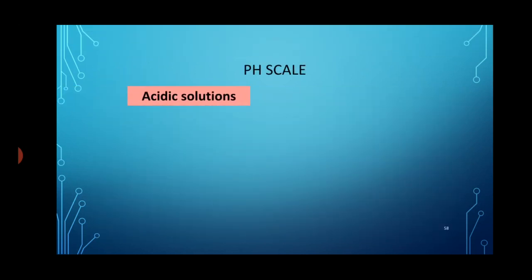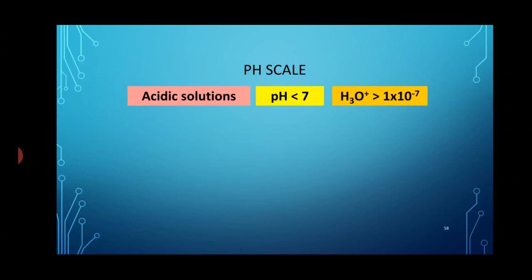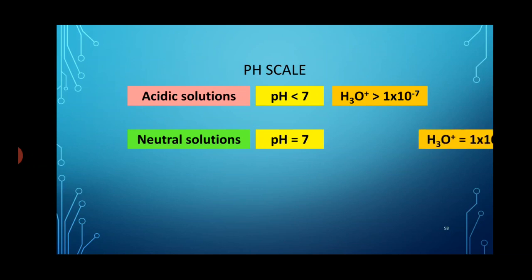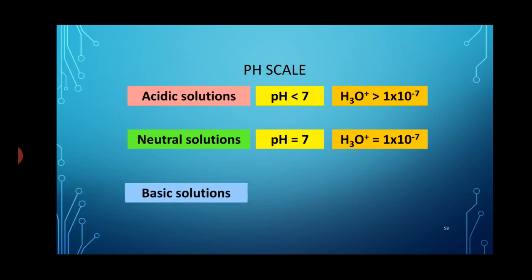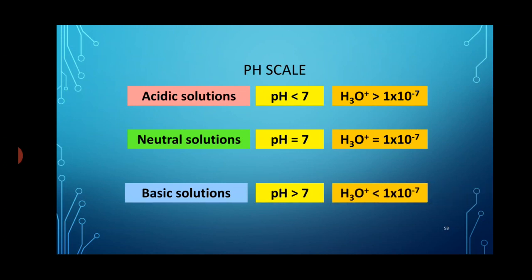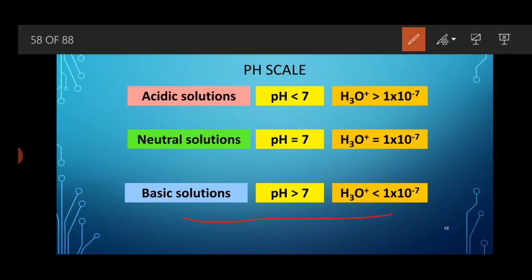In the pH scale: when the value of pH is less than 7, it is an acidic solution. When pH is equal to 7, it is a neutral solution. When pH is more than 7, it is a basic solution. Several values exist on the scale — 1, 2, 3, 4, and so on — all of which are acids. But among all acids, which one is the strongest? The acid with the lower pH value is considered the strongest.